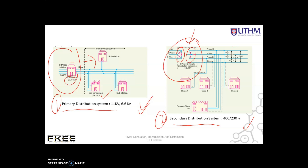From 11 kV to 400 volts, the voltage between any two phases is 400 volts — this is the line voltage. The voltage between any phase and neutral, which we call the phase voltage, V-phase, is 230 volts. The single-phase domestic loads are connected between any one phase and the neutral, using V-phase of 230 volts which is single-phase.